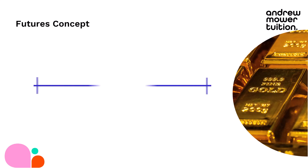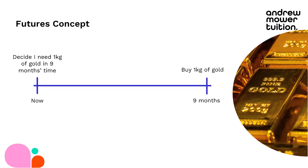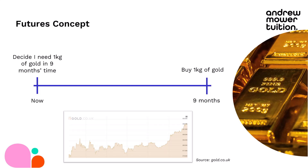I'm going to do a little timeline. I've decided today that in nine months' time I'm going to buy a kilogram of gold — I'm going to make an investment. I can't do that now; I need to save up, as this is quite a significant investment. So in nine months' time I'll go to the trader and buy that kilogram of gold. The problem is that the price of gold is fairly volatile. As you can see from gold.co.uk, it's been going up quite a bit recently and is currently around £90,000 — but in nine months' time, who knows? That makes me really worried.